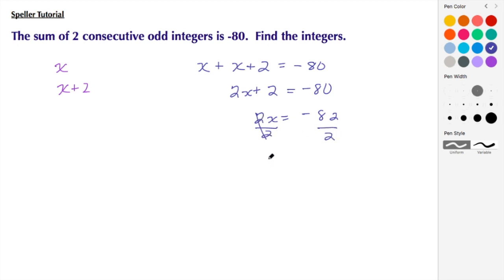And then to isolate the x we need to divide everything by 2. So in doing so, 2 divided by 2 leaves me with just x and then I have to take half of negative 82 which gives me negative 41.